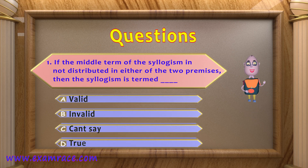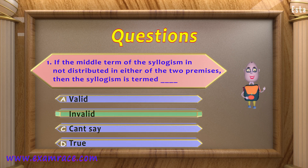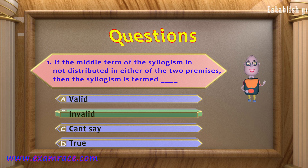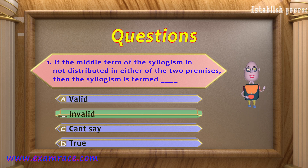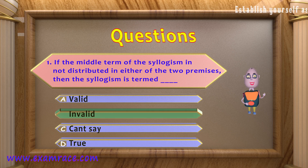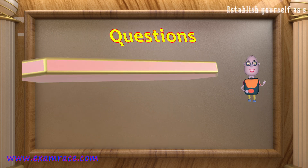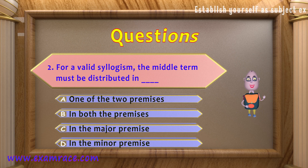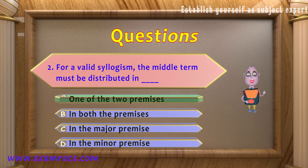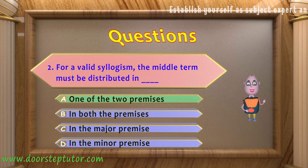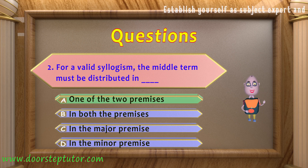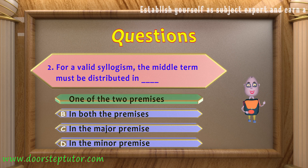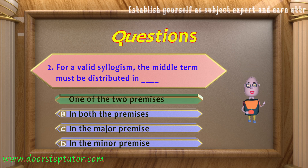Explanation for question 1: If the middle term of the syllogism is not distributed in either of the two premises, then the syllogism is termed invalid. Explanation for question 2: For a valid syllogism, the middle term must be distributed in at least one of the two premises — either the major premise or the minor premise.